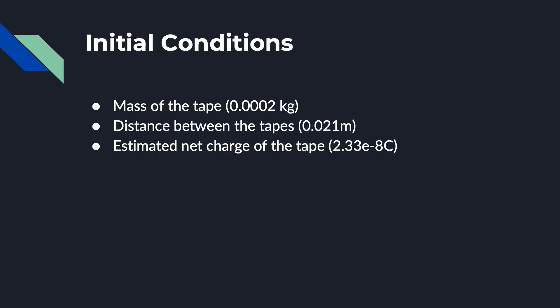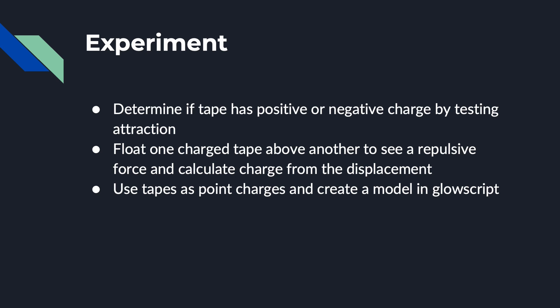For initial conditions, the mass of the tape is 0.0002 kilograms. The distance between the two floating pieces of tape is 0.021 meters, and the estimated net charge of the tape is 2.33 times 10 to the negative 8 coulombs. We will determine if the tape has a positive or negative charge by testing its attraction — floating one piece of charged tape above the other to observe a repulsive force, calculate the charge from the net displacement, and model the tapes as point charges in GlowScript.